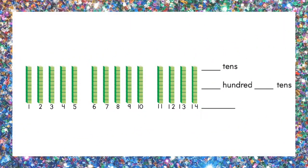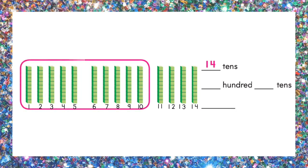Let's do one more. Write how many tens there are: fourteen. Now circle ten of them and write the number in different ways. One hundred and four tens equals one hundred forty.